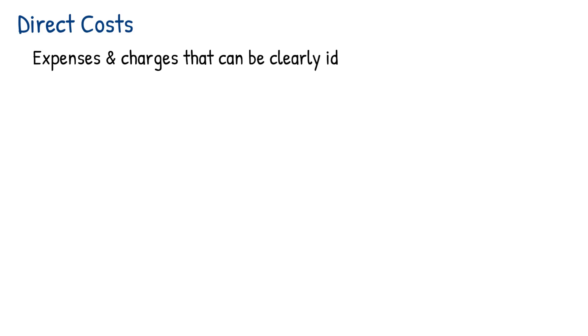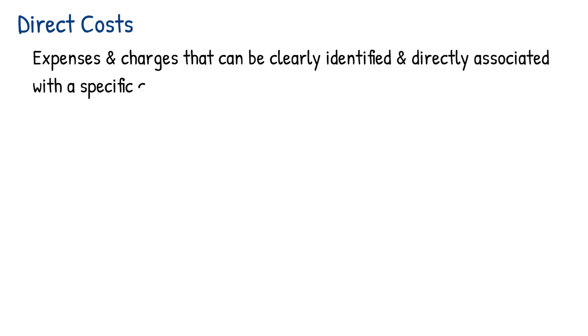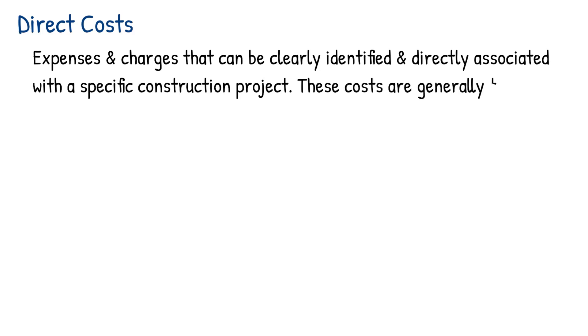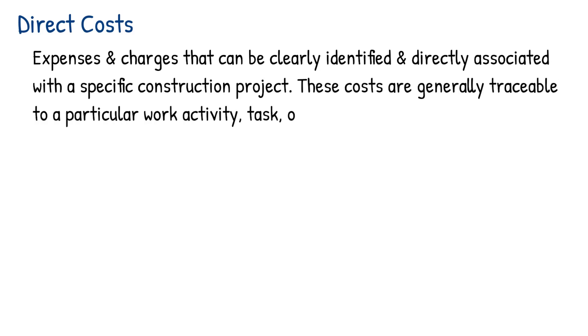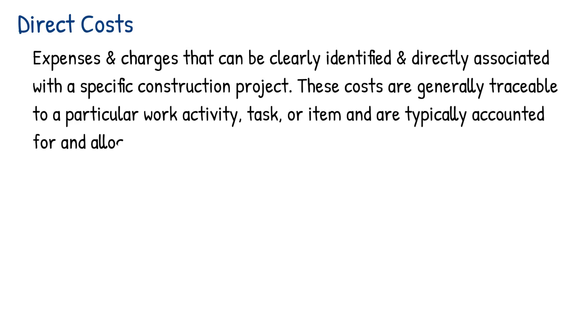Direct costs are expenses and charges that can be clearly identified and directly associated with a specific construction project. These costs are generally traceable to a particular work activity, task or item, and are typically accounted for and allocated directly to the project's budget.